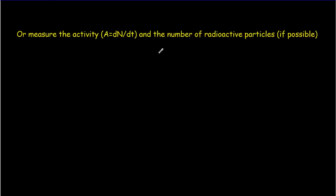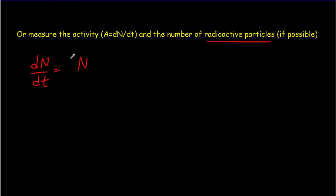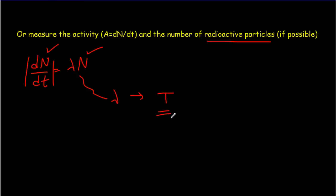In certain circumstances, if you've just prepared a sample of radioactive particles, you might actually know the initial number of particles. If you know the number of particles and you know the activity, then you can use dN/dt equals lambda times N to figure out lambda, and then use lambda to get the half-life.